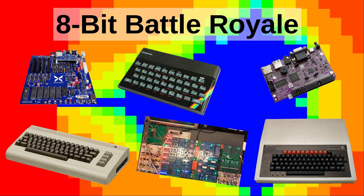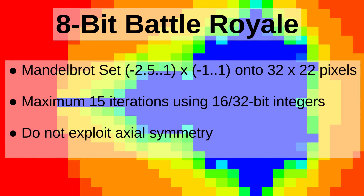Since all these systems differ widely in their graphics capabilities, Matt came up with a kind of smallest common denominator benchmark. The following rules apply to all competitors: display the Mandelbrot set by projecting the complex plane from minus 2.5 to 1, times minus i to i, onto 32 by 22 pixels. For each pixel, calculate a maximum of 15 iterations using integer math operations for fixed-point fractional numbers. And it is not allowed to exploit the axial symmetry of the Mandelbrot set — every pixel has to be calculated ab initio.